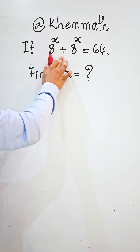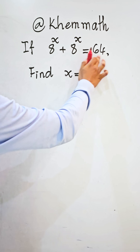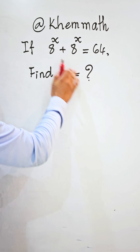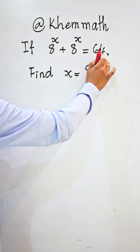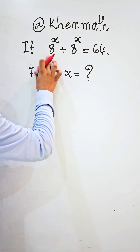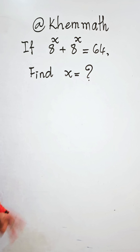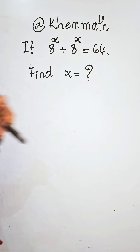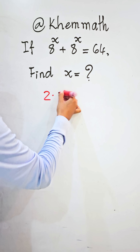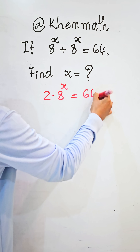If b to the power 8 plus b to the power 8 equals 64, find the value of b. Look, the exponential equation: b power 8 plus b power 8 appears two times, so we get two times b power 8 equals 64.